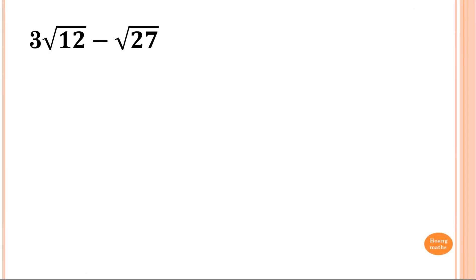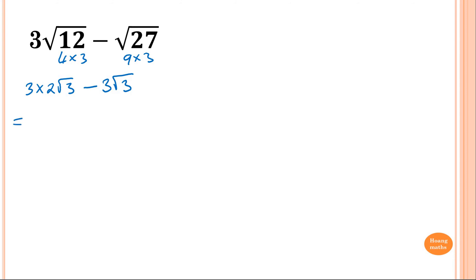This one: 3 root 12 minus square root of 27. For 12: it's 4 times 3, so root 4 is 2, giving 3 times 2 root 3, which is 6 root 3. For 27: it's 9 times 3, and root 9 is 3, so that's 3 root 3. Now 6 root 3 minus 3 root 3: 6 minus 3 is 3, so the answer is 3 square root of 3.